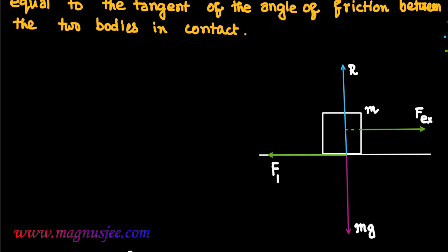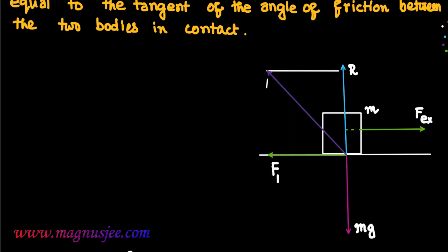Taking FL and R as two adjacent sides, we can draw a rectangle. The diagonal of this rectangle is the resultant N of FL and R; the two remaining sides are imaginary and are denoted by dotted straight lines. Normal reaction R acts along OY in the vertically upward direction, and the resultant N makes an angle theta L with the direction of R.